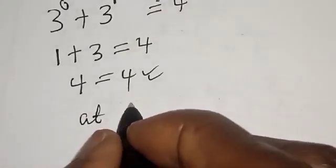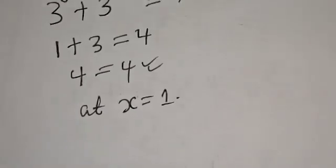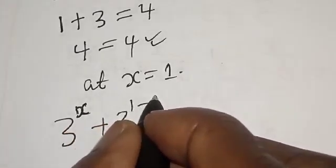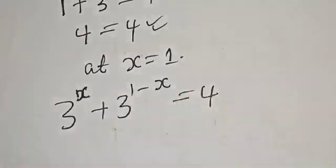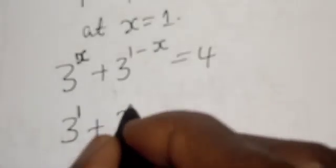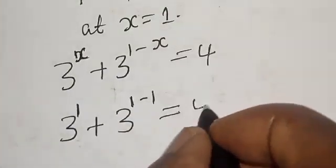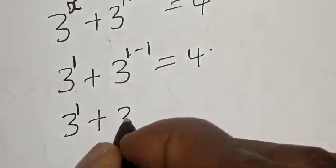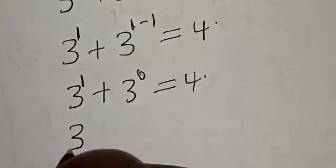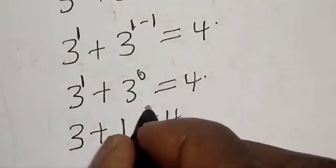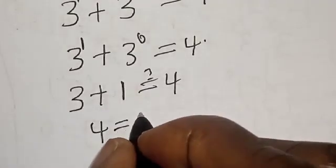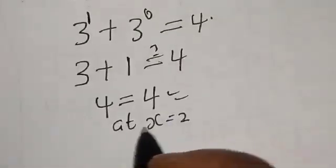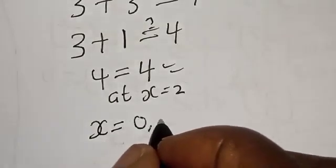Let's check at x equals 1. We have 3 raised to power 1 plus 3 raised to power 1 minus 1, which must equal 4. This is 3 raised to power 1 plus 3 raised to power 0, which must equal 4. Then 3 raised to power 1 is 3, and 3 raised to power 0 is 1. So 3 plus 1 equals 4, which equals 4. We satisfy the given equation at x equals 1. Therefore our final answer is x equals 0 and x equals 1.